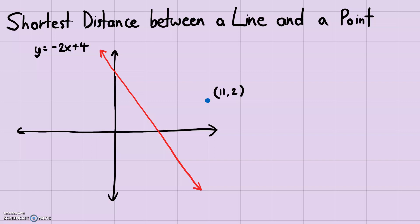The basic concept — you may remember from geometry — is that the shortest distance between a line and a point will be a line that is perpendicular to the original line. So we need to find the line that is perpendicular to the red line but passes through the blue point.